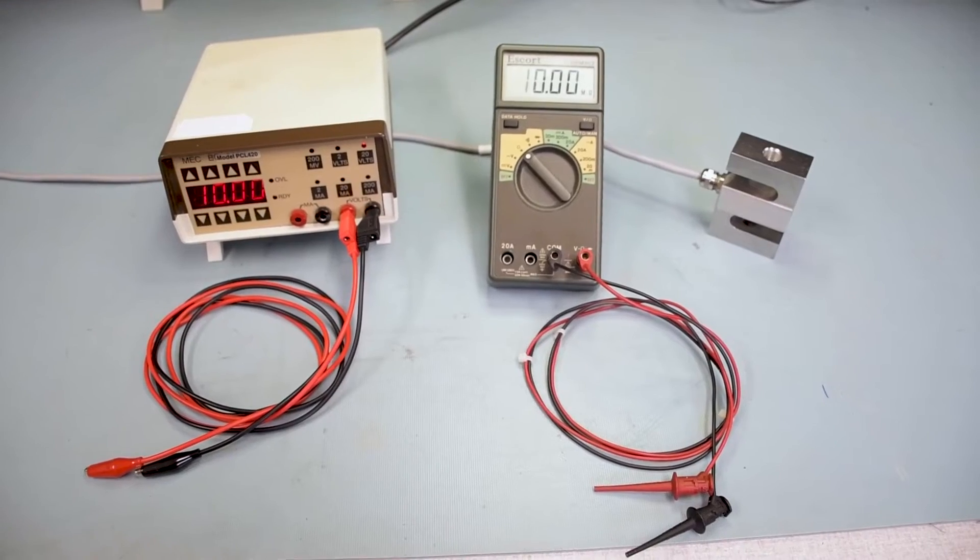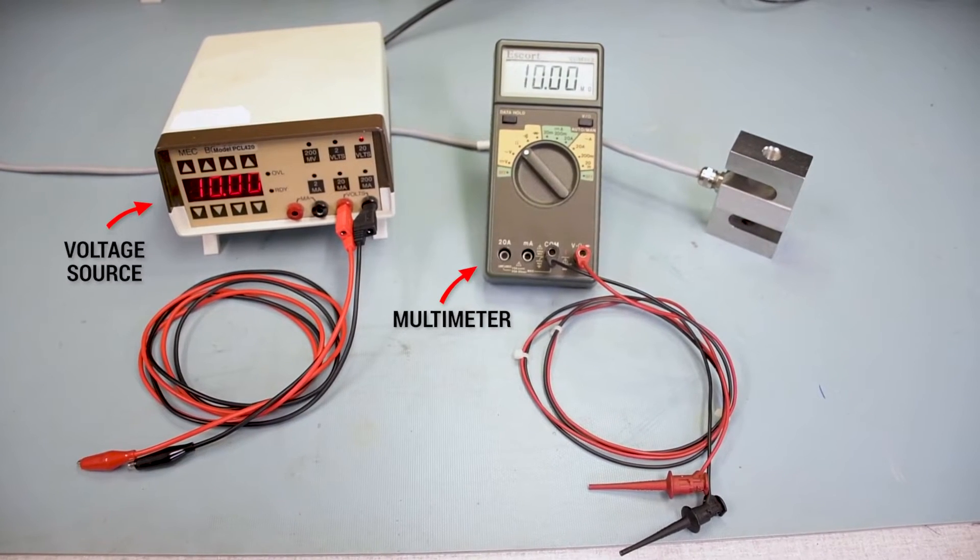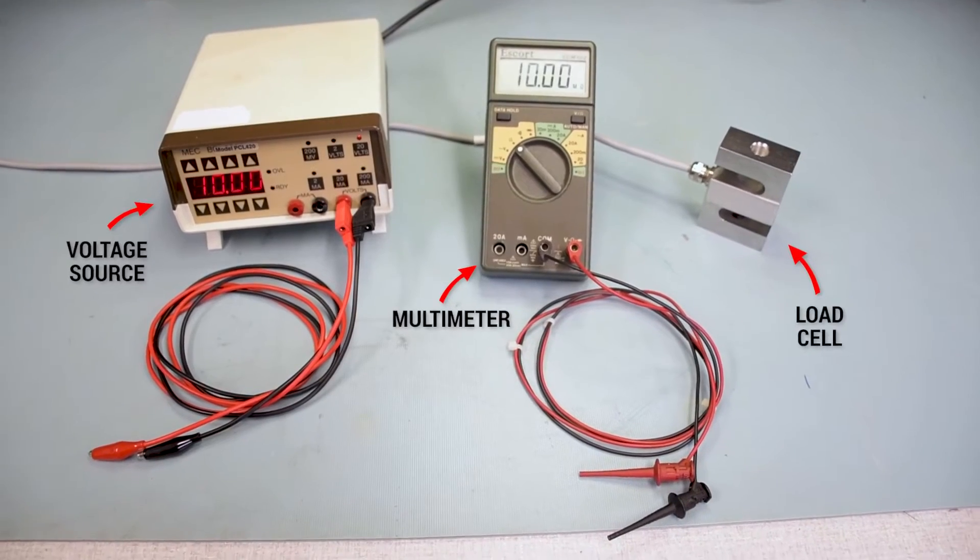Maybe you have a load cell that isn't responding, or you just want to test a load cell before you put it into your application. Either way, you would need a multimeter and a voltage source. In this test, we're going to be using a 10 volts DC power supply. And where would we be without a load cell?